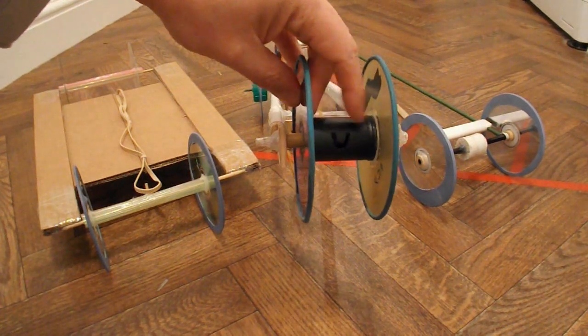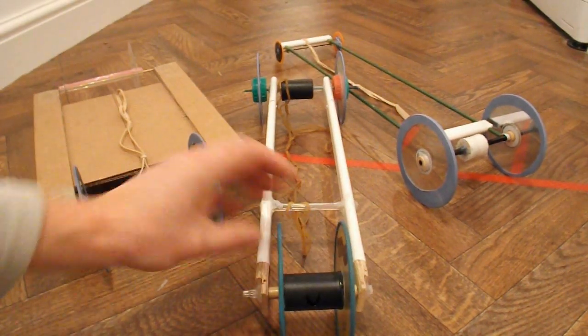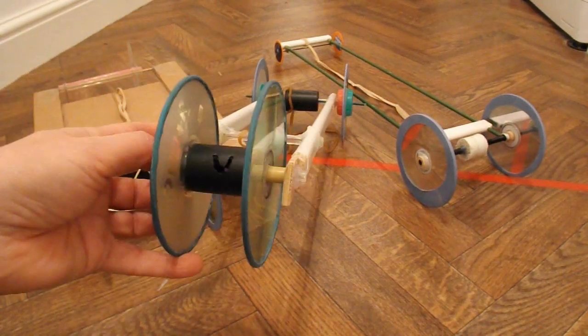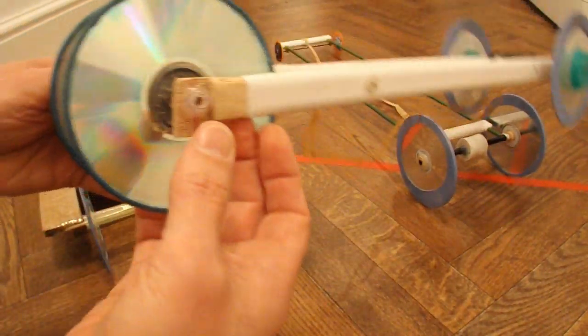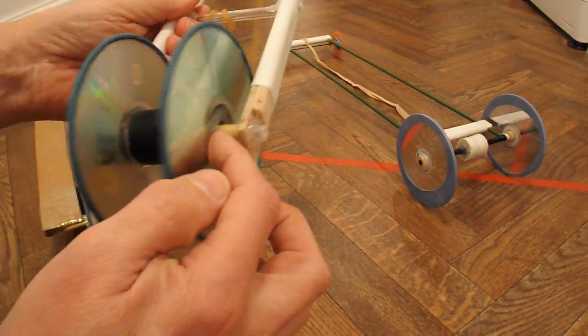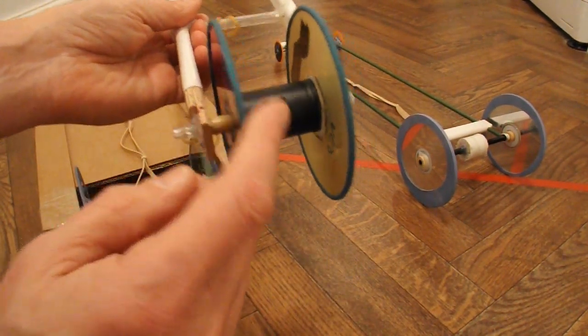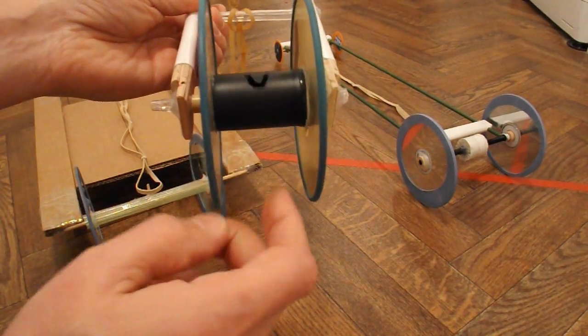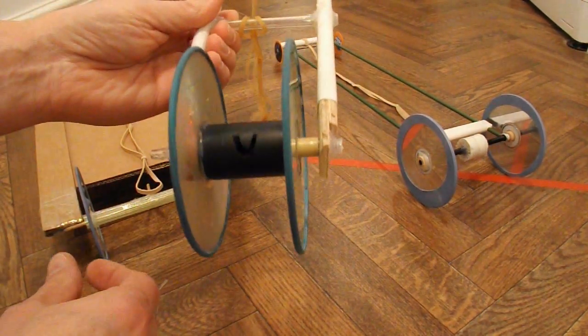It's got holes drilled through the middle and it actually runs on a ballpen tube, so the actual bearing surface is the outside of the 35 millimeter plastic film canister.